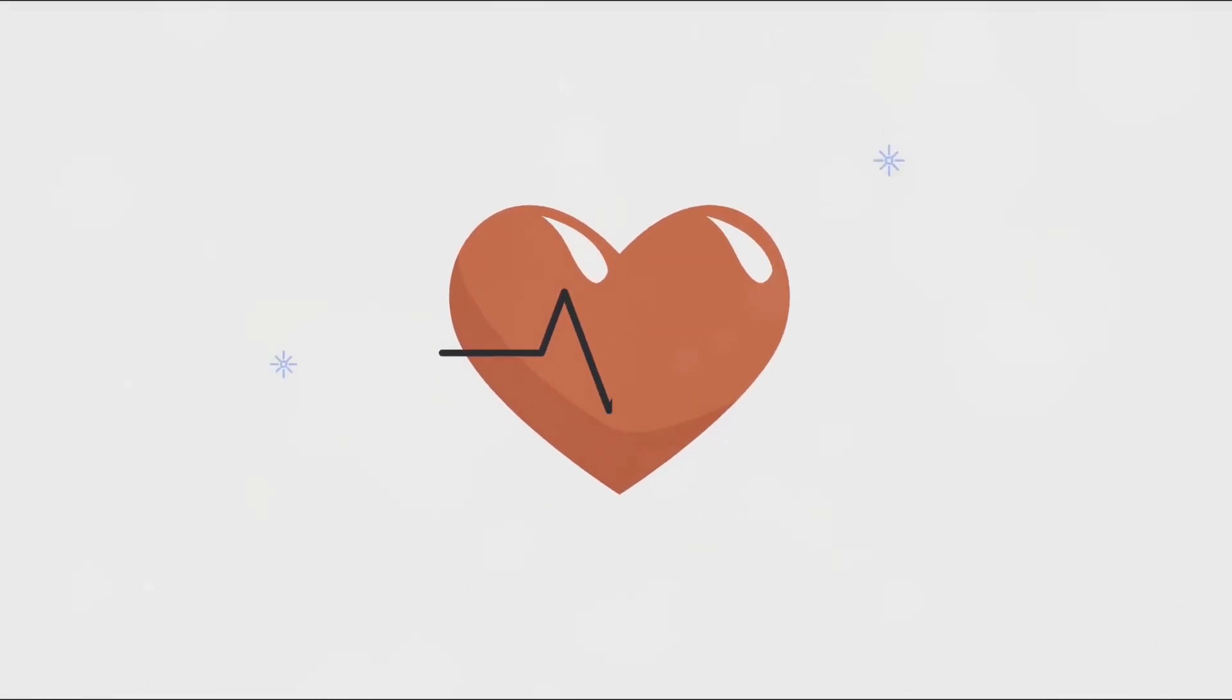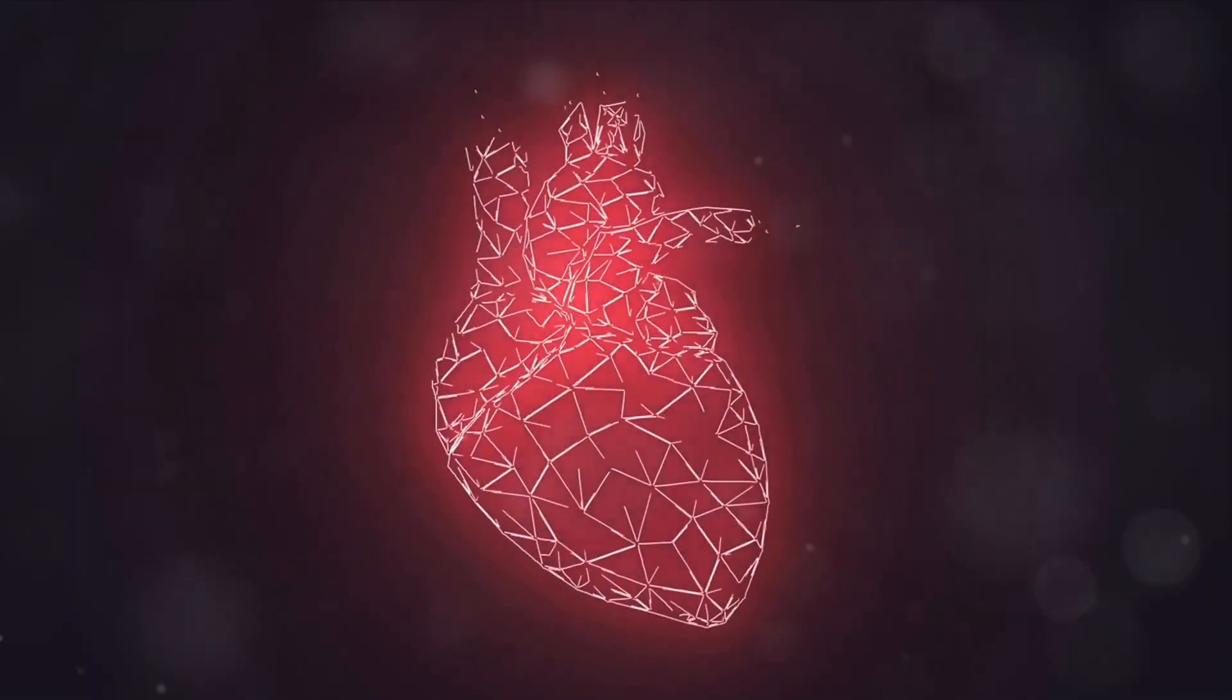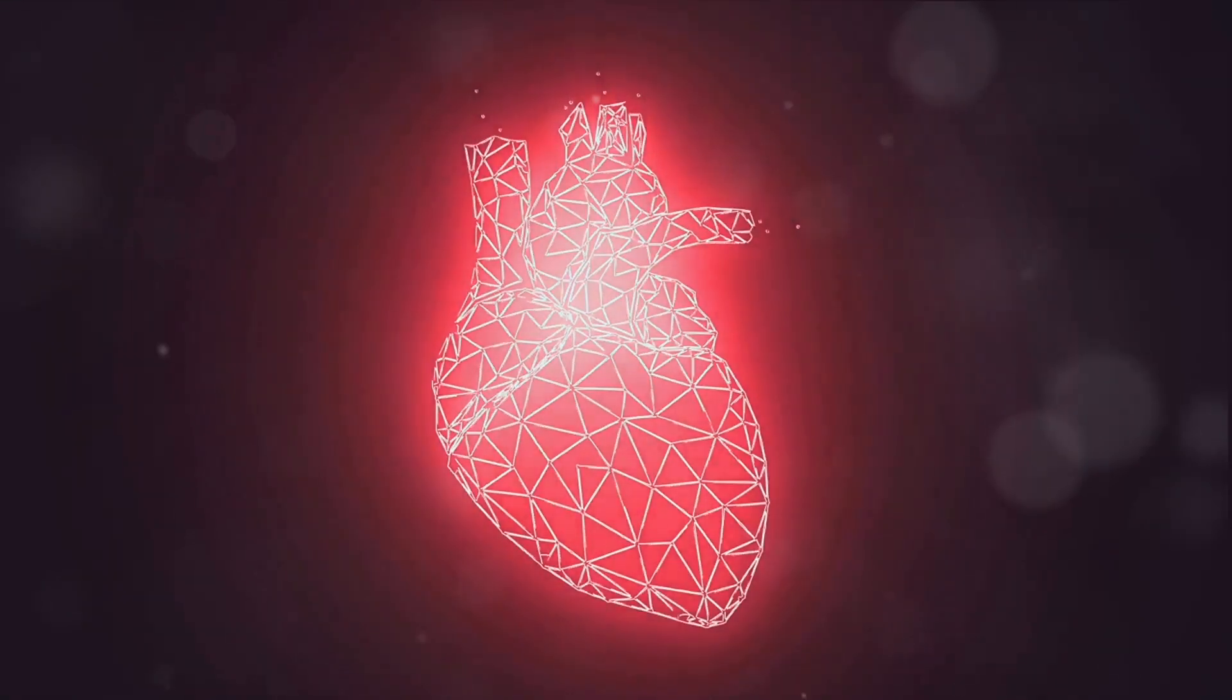Next, the blood crosses the tricuspid valve and enters the right ventricle, another chamber of the heart. From there, the blood is pumped through the pulmonary valve into the pulmonary artery, which carries it to the lungs.